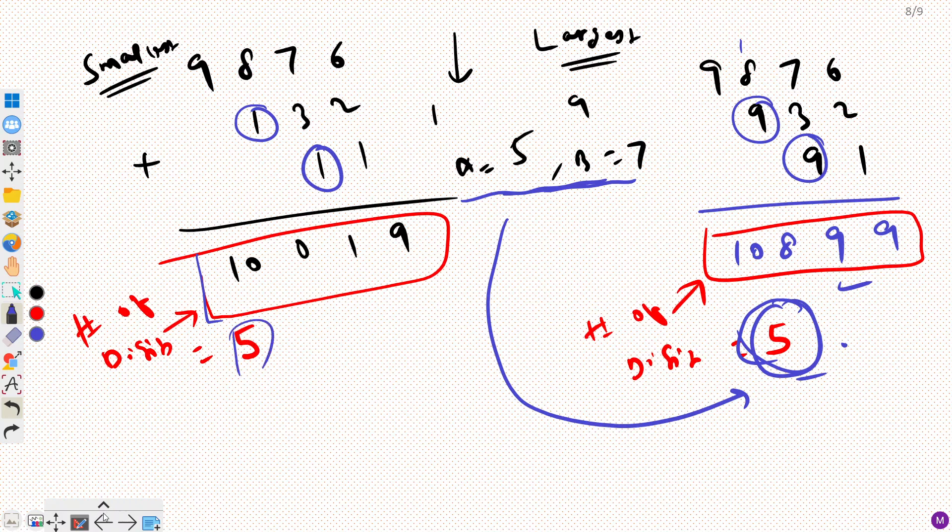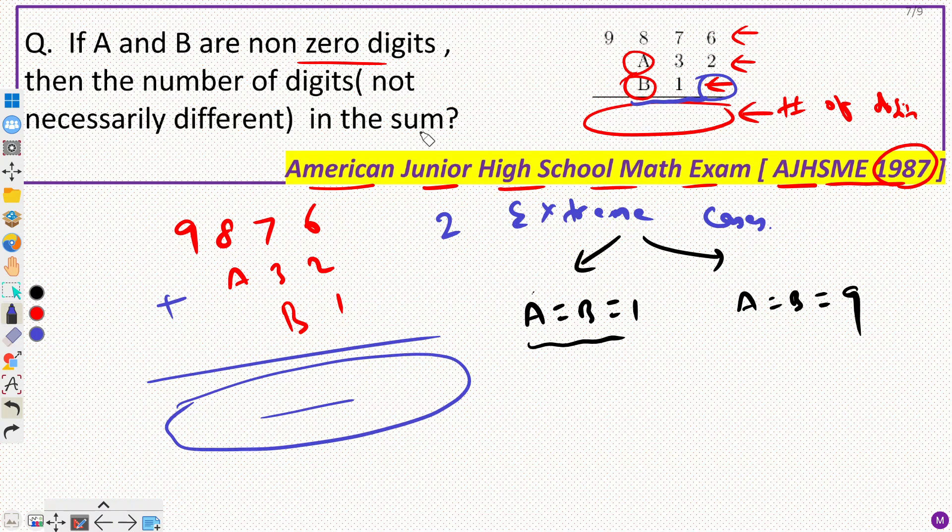So this is my answer. So this is always going to be 5. It is independent of what digit I am going to choose for A and B. So I hope this is clear.